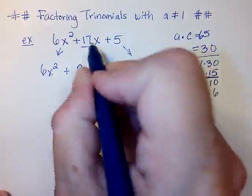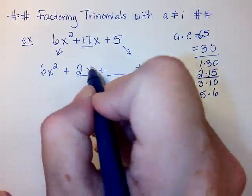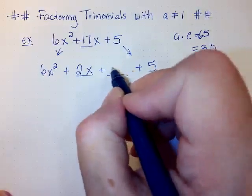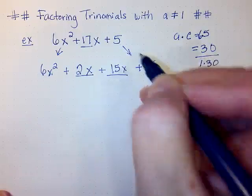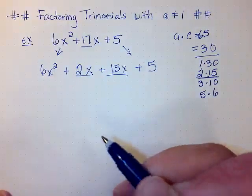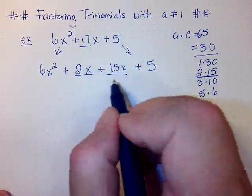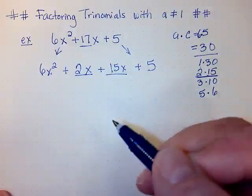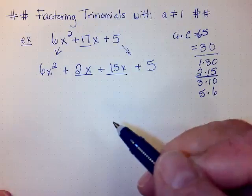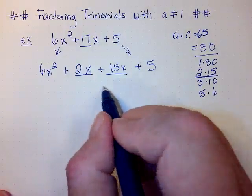I'm trying to get 17x, so this is going to be 2x and this will be 15x. Again, if I was to add these two together, I would get back the 17x. Now I don't want to add them—that's not where we're going with this—but I do want to double check that that's going to give me back my original trinomial.